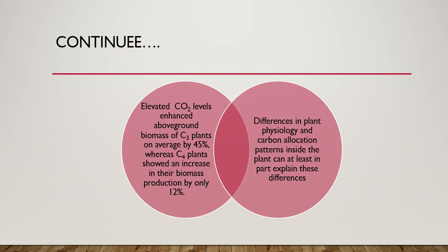Several studies have also reported that elevated carbon dioxide levels enhance above-ground biomass of C3 plants on average by 45 percent, whereas C4 plants showed an increase in their biomass production by only 12 percent. Differences in plant physiology and carbon allocation patterns inside the plant can at least in part explain these differences.